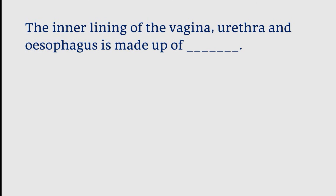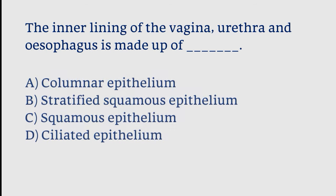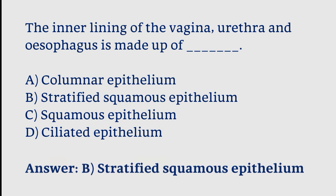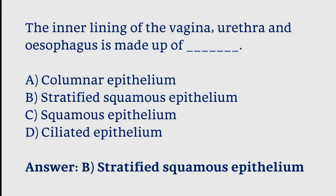The inner lining of the vagina, urethra, and esophagus is made up of: columnar epithelium, stratified squamous epithelium, squamous epithelium, or ciliated epithelium. The correct answer is option B. The inner lining is made up of stratified squamous epithelium.